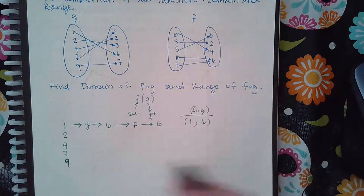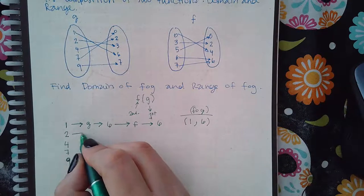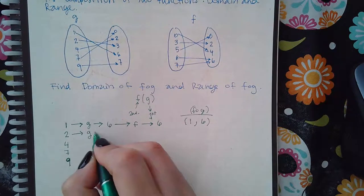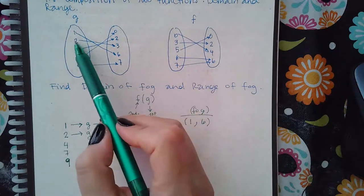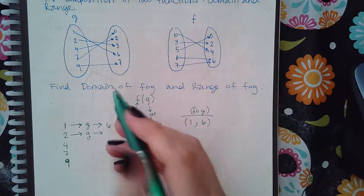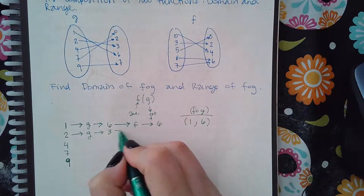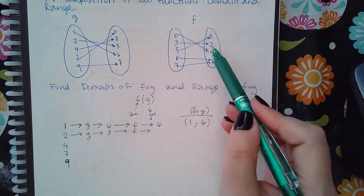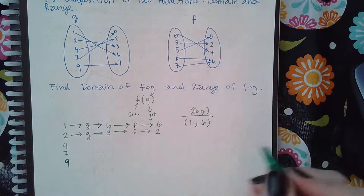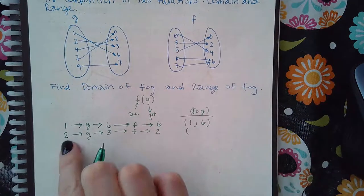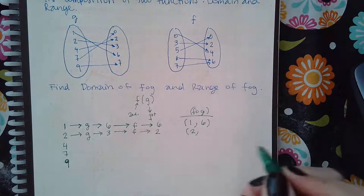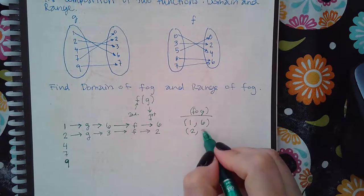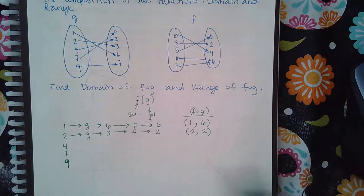Now let's go for two. So if I plug two into g, that means this is the input and the output is a three. Then if I go and plug three, f three into f, two is the output. So I started off with two as my first input and my final output is a two.